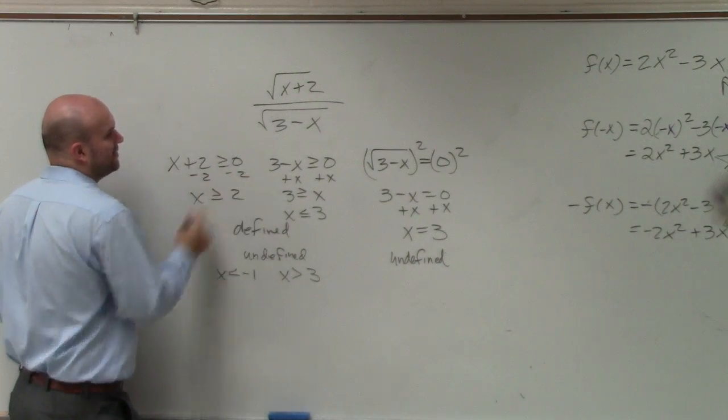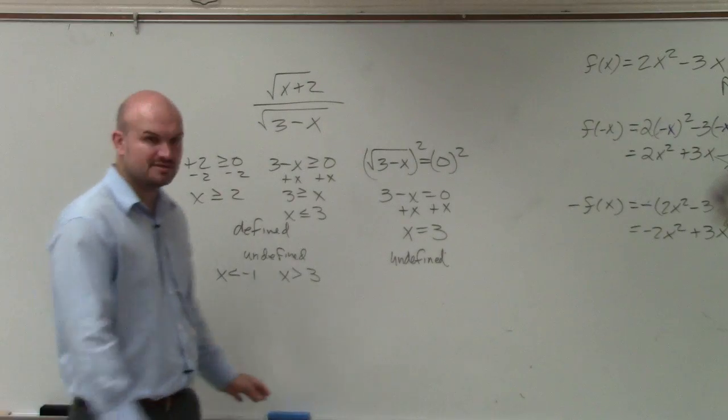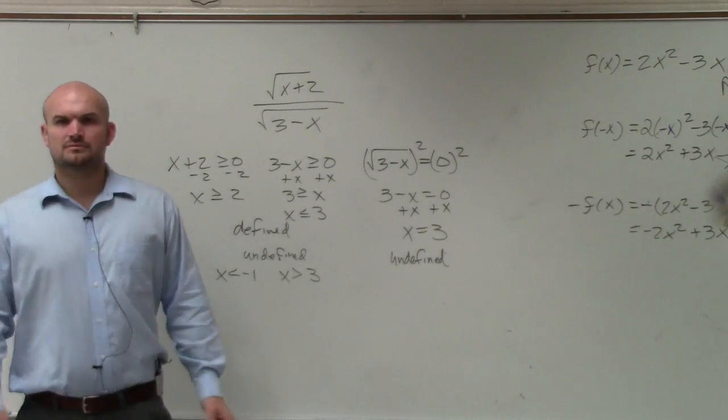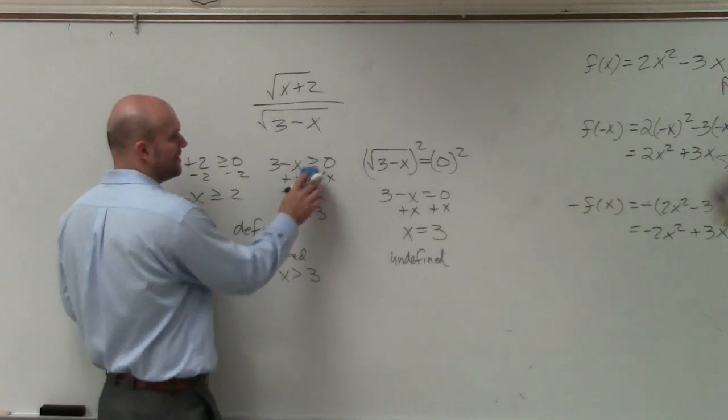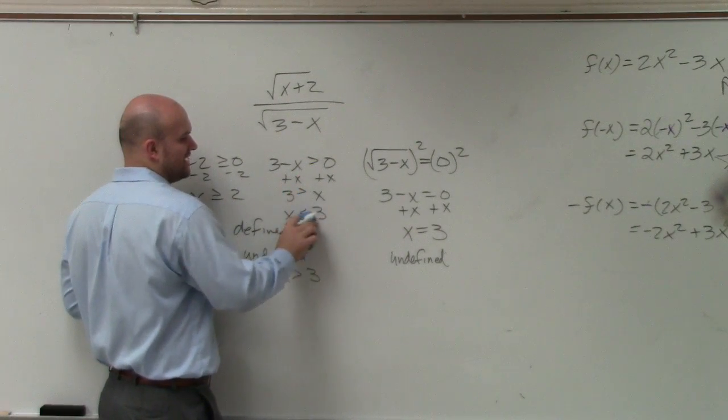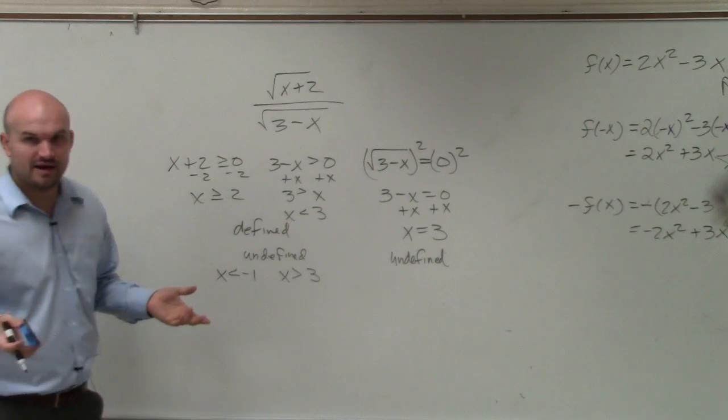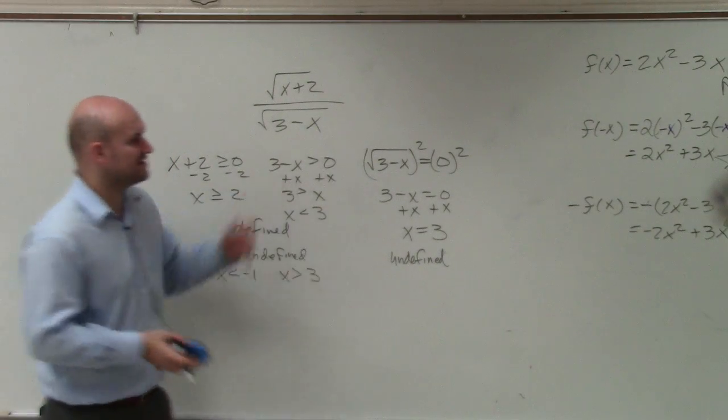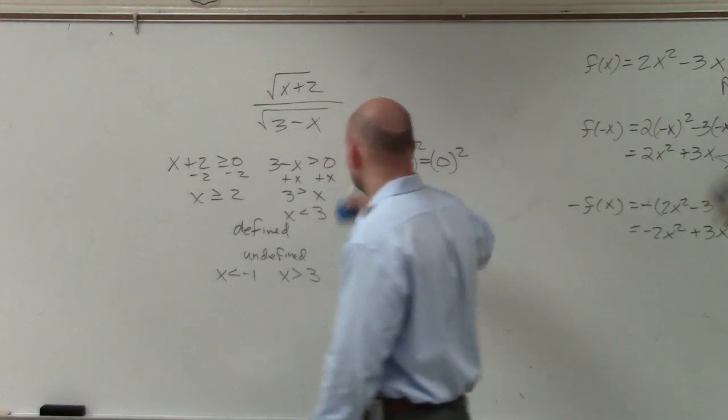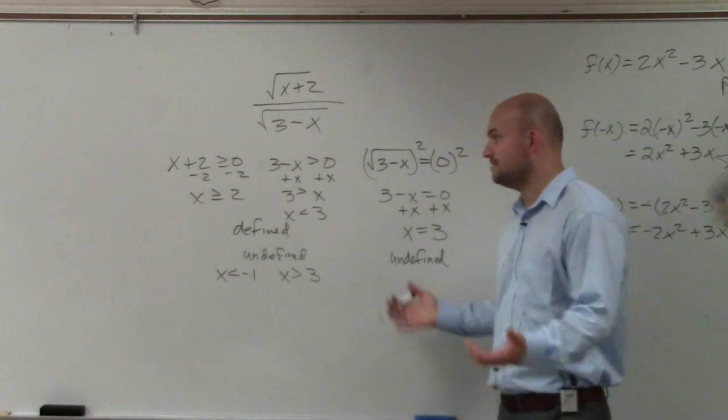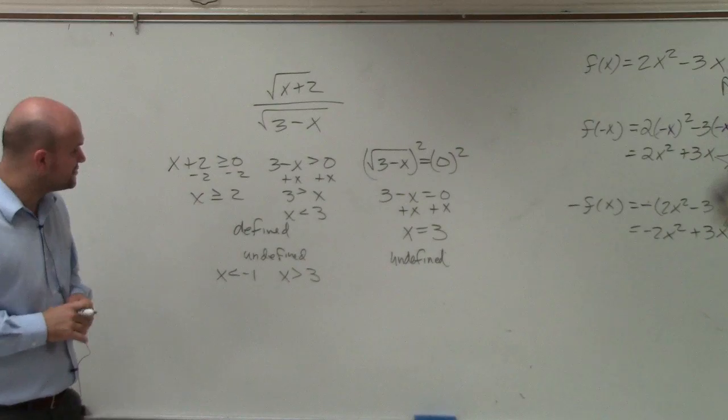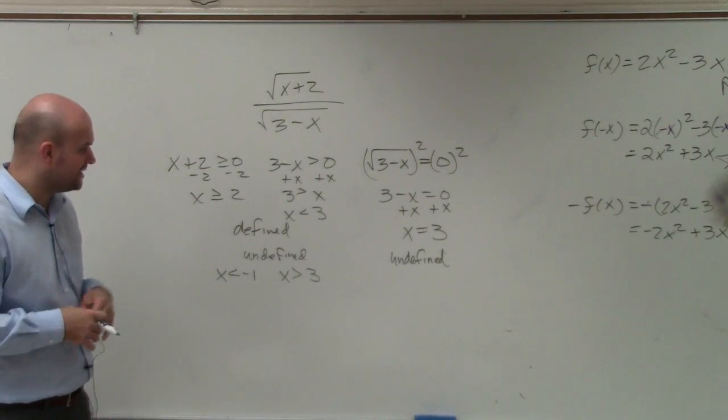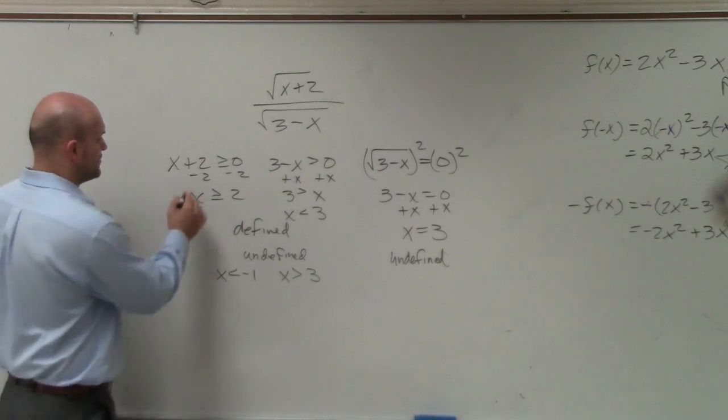And actually, you know what? I could have avoided all of this. It can't be equal to 3, right? Would you guys agree? So I don't even have to go through this step. If I just rewrite that as greater than, that's perfectly fine as well. So x has to be greater than or equal to 2, and x has to be less than 3. Those are the values where it's defined.